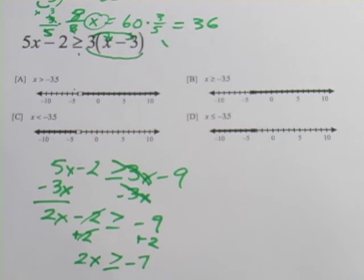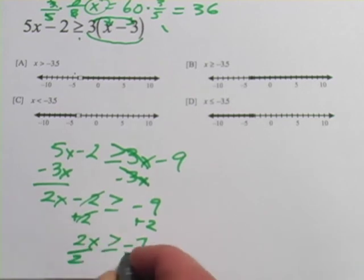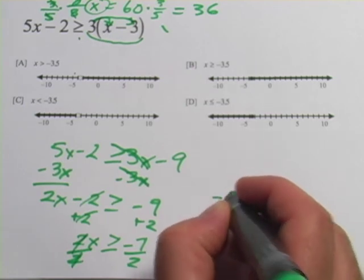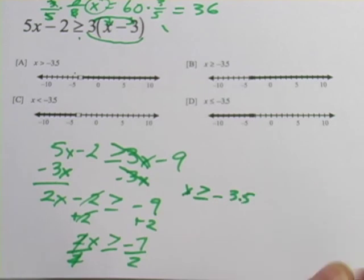Last step to get x alone is simply divide both sides by 2. And I get x is greater than or equal to negative 7 halves. Negative 7 divided by 2 is negative 3.5. So x is greater than or equal to negative 3.5.